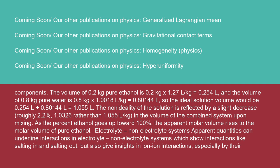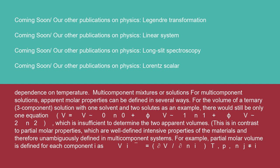Electrolyte–non-electrolyte systems: apparent quantities can underline interactions in electrolyte–non-electrolyte systems which show interactions like salting in and salting out, but also give insights into ion–ion interactions, especially by their dependence on temperature.